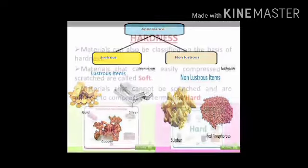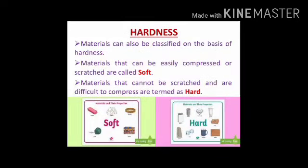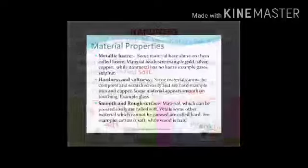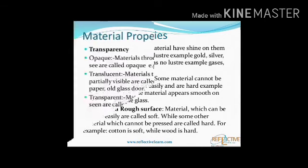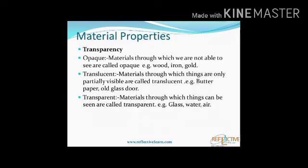Texture से हमें feel होता है कि material smooth है या rough है। Hardness और softness के basis पे भी हम material को classify कर सकते हैं — कुछ आसानी से compress हो जाते हैं, वो soft होते हैं, और कुछ को ना खींच सकते हैं ना compress कर सकते हैं, वो hard materials होते हैं। Most metals में metallic luster होता है मतलब shine होती है — जैसे gold, silver, copper।